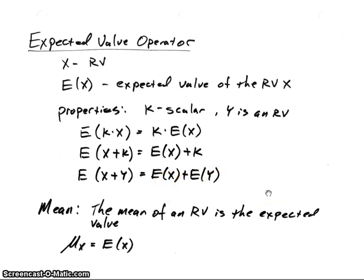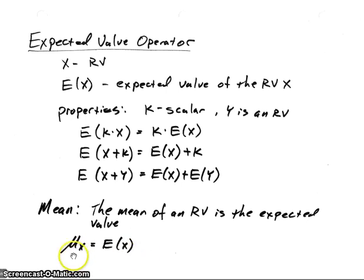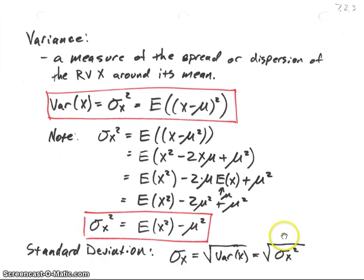The expected value operator is sometimes referred to as the mean of a random variable. I'll use those interchangeably — mean or expected value. We'll use mu with a subscript of the random variable, mu sub x in this case, as the expected value of x. Now let's look at the variance of a random variable.